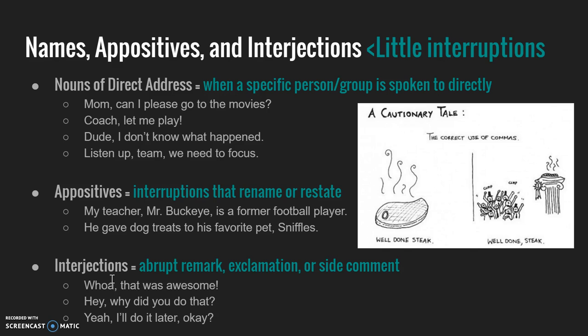Interjections are another type of brief pause that get a comma. Interjections are one of the nine parts of speech — they are abrupt remarks, exclamations, or side comments. Just like a noun of direct address has a little word followed by a comma, interjections are also a little word with a comma, except these are not names. For example: Whoa, that was awesome! Hey, why did you do that? Yeah, I'll do it later, okay? Both yeah and okay are interjections — single words or short phrases that exclaim or make a side comment.